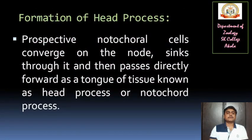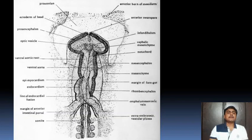Then, formation of the head process. The prospective notochordal cells converge on the node, sink through it, and then pass directly forward as a tongue of tissue, also known as the head process or notochord process. Here you can see in this diagram in the middle — I am showing this is the head process formation on this particular chick embryo.